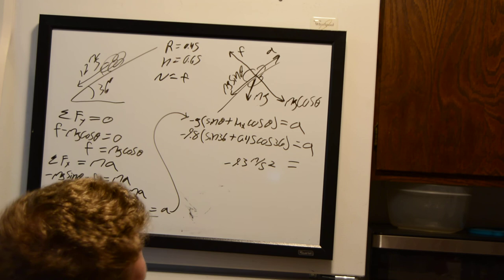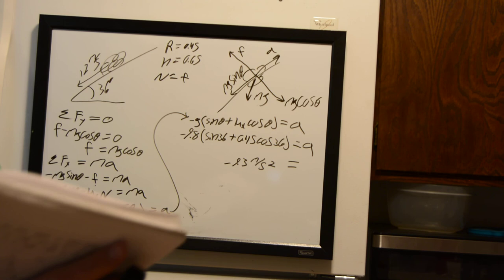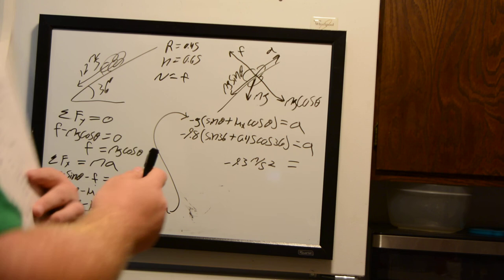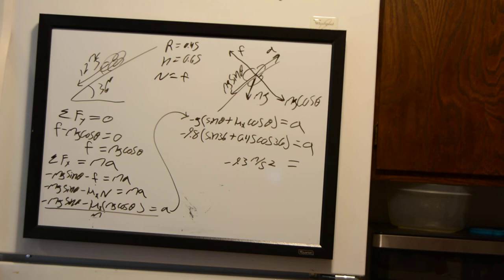So as the rocks are rolling up the hill, they're going to be decelerating by 9.3 meters per second per second. We'll do another video for the second part since my whiteboard is full.